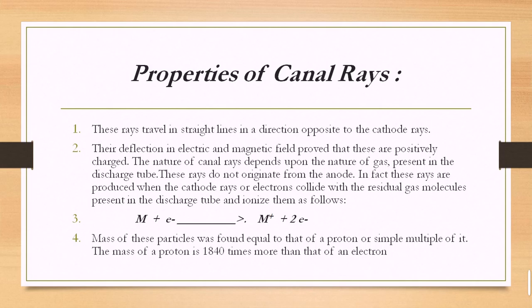Canal rays travel in a straight line in the direction opposite to cathode rays, moving perpendicularly toward the anode but in the opposite direction to cathode rays. Their deflection in electric and magnetic fields proves that these are positively charged. The nature of the canal rays also depends on the nature of the gas present in the discharge tube — unlike cathode rays, canal rays are produced from positively charged ions, which may be alpha ions or beta particles.